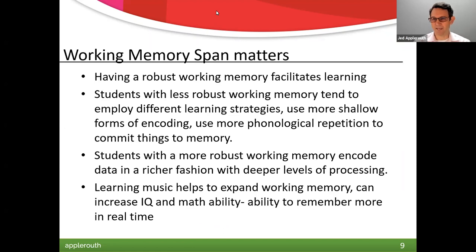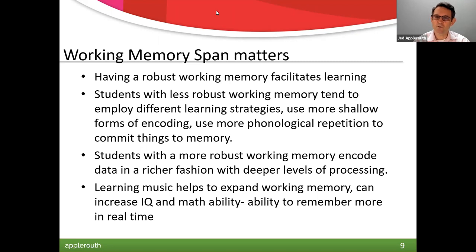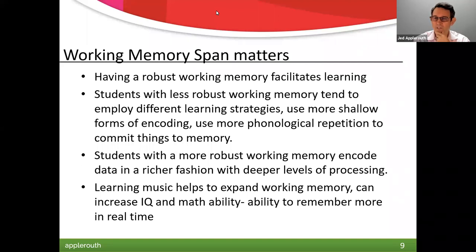Working memory span is something we actually measure in intelligence tests — digit span, for instance. Some people have a bigger working memory; there's some genetics involved. Interestingly, research from grad school shows that people with a more robust working memory and longer memory span tend to use different kinds of encoding strategies. People with shorter working memory spans tend to use more shallow forms of encoding — they'll repeat things a lot. People with deeper working memory often construct diagrams, images, or more visual encoding.